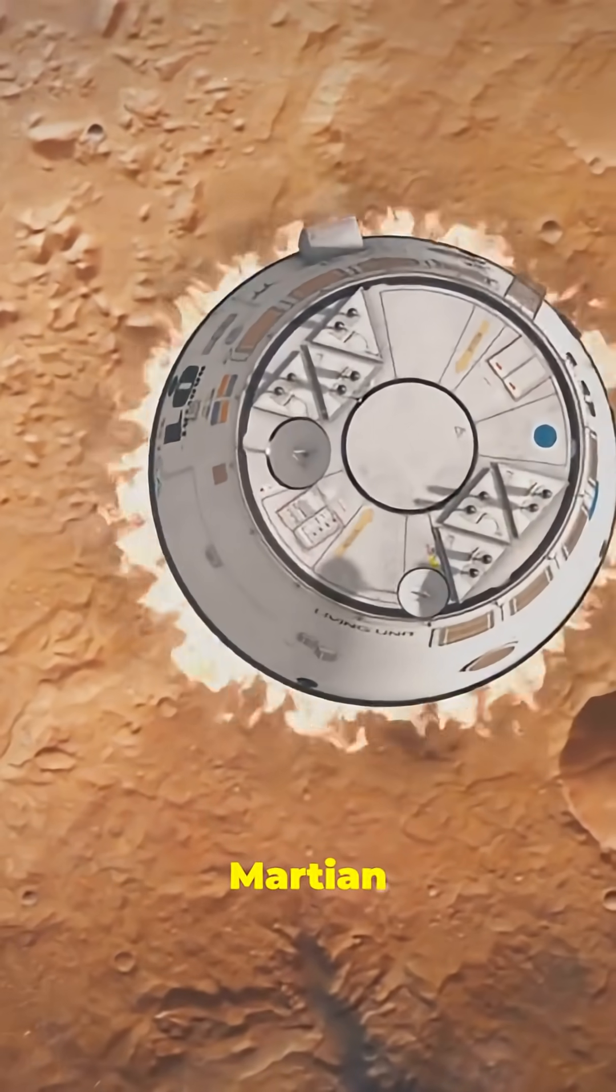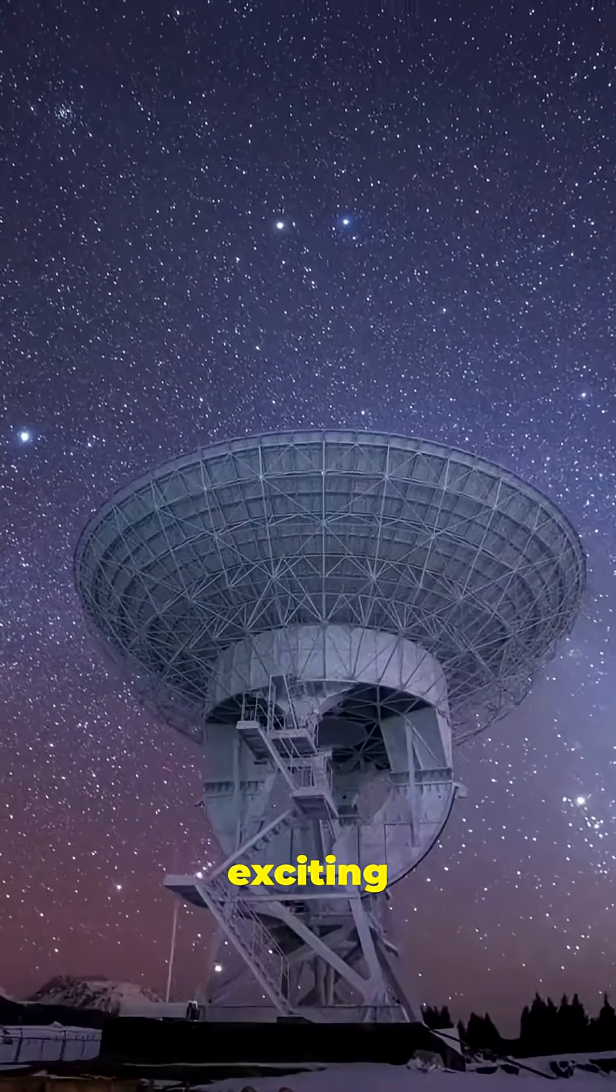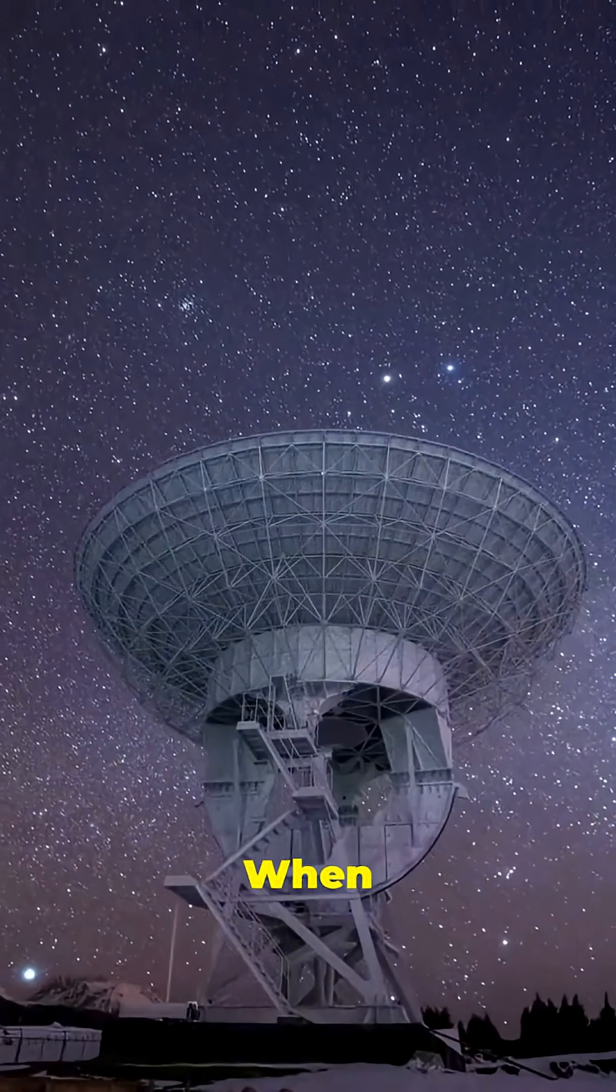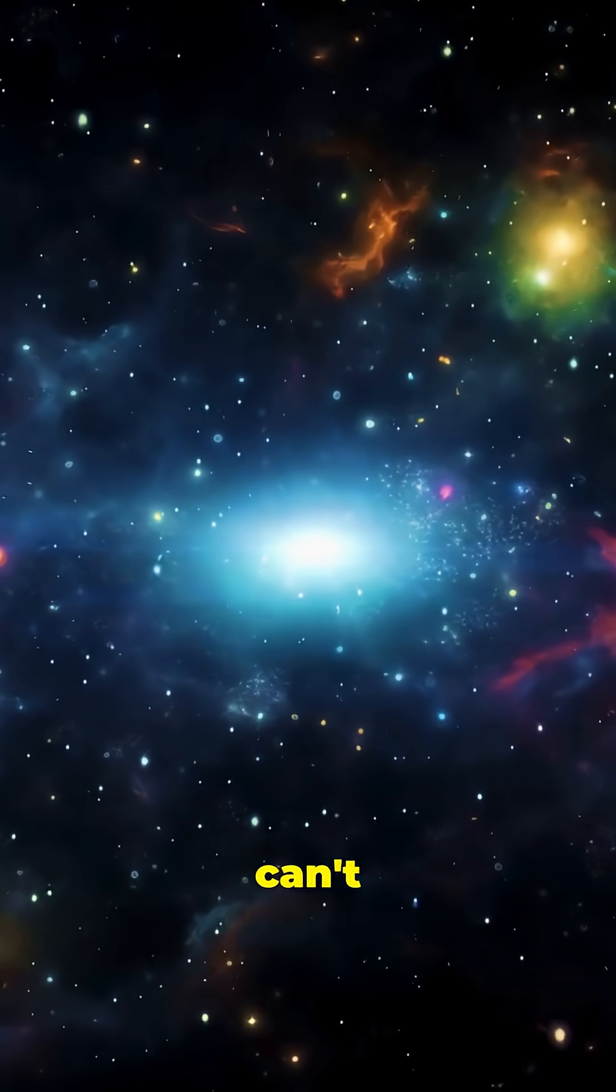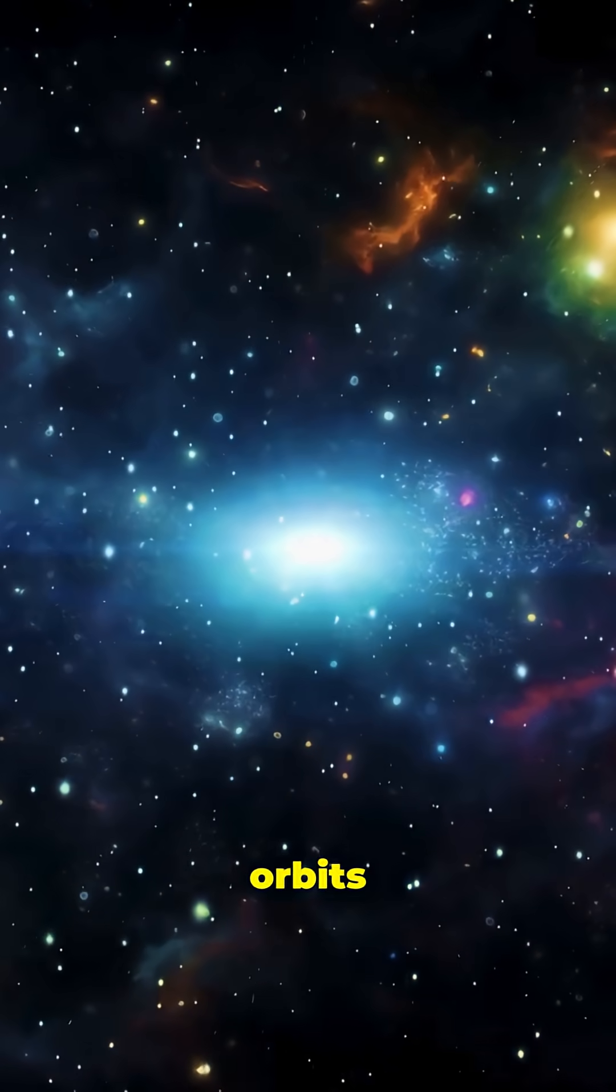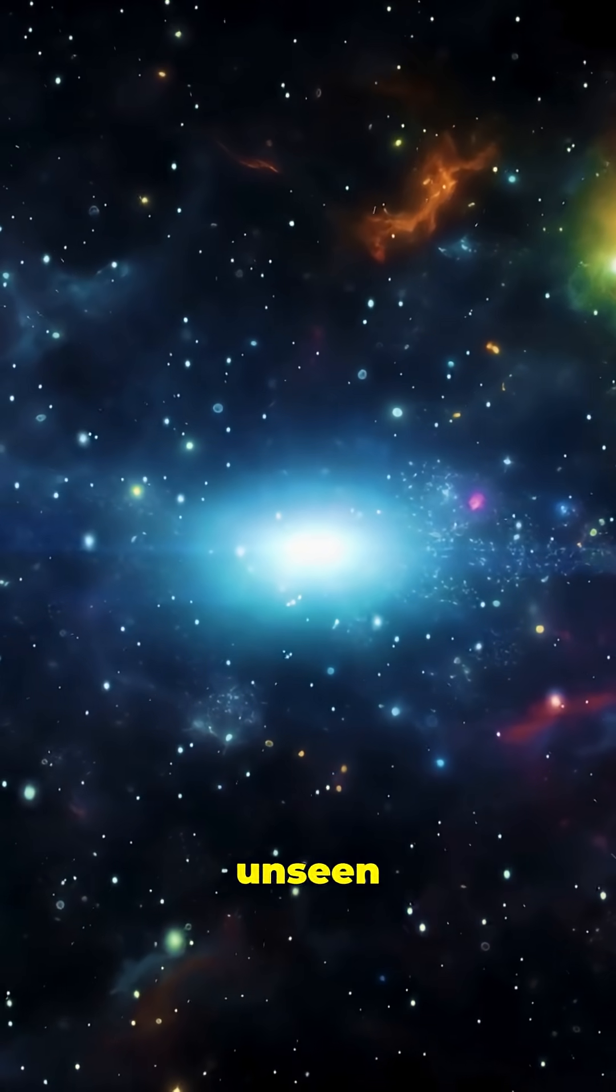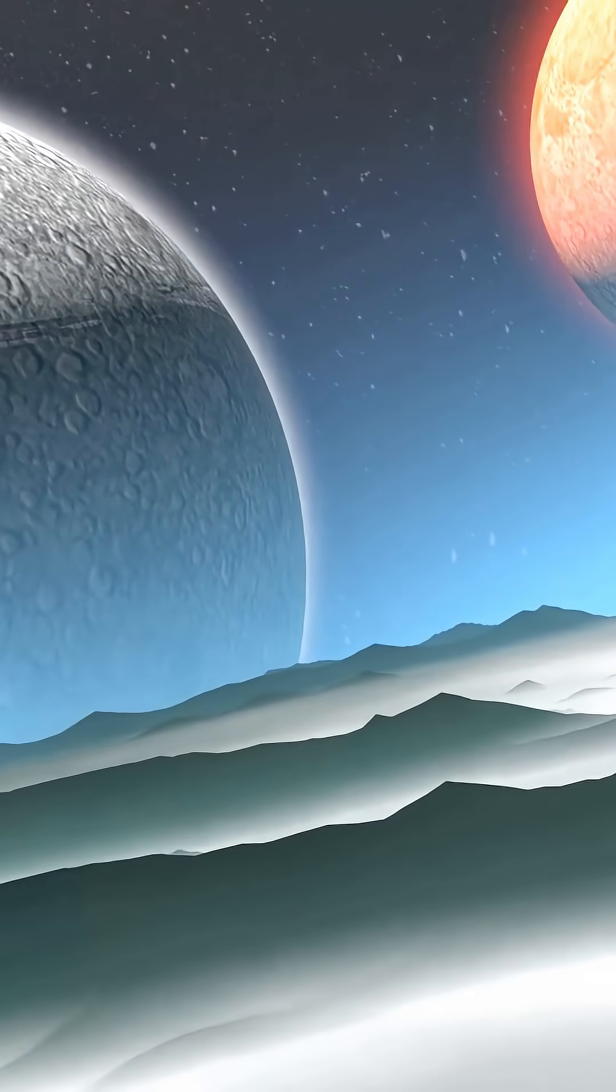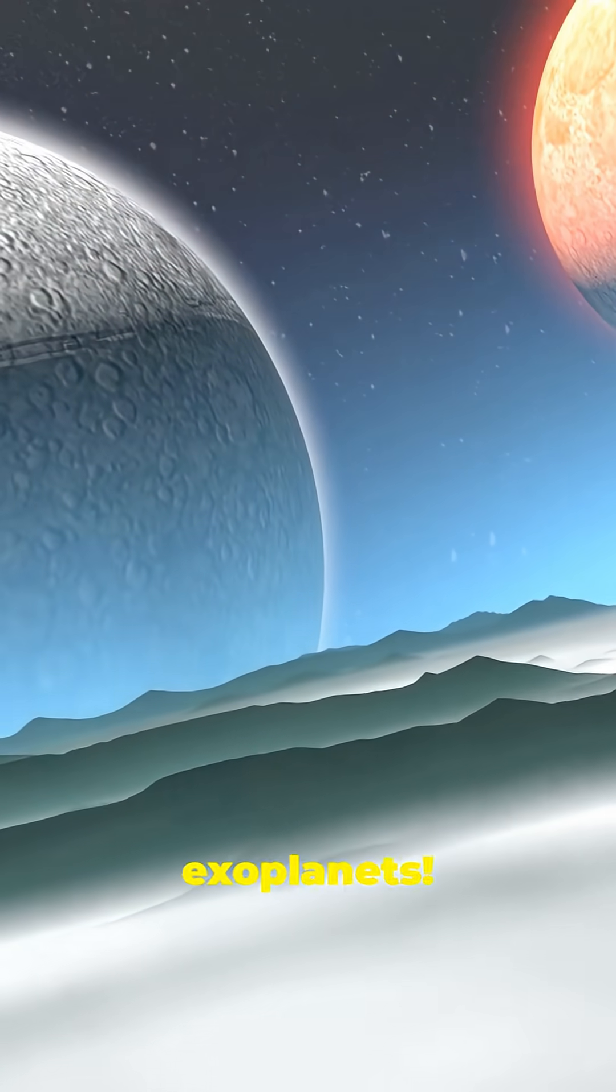What's exciting is that barycenters can help us discover alien worlds. When we look at distant stars, we often can't see their planets directly. But we can detect a star's tiny wobble as it orbits its own barycenter with an unseen planet. This method, called the radial velocity method, has helped discover hundreds of exoplanets.